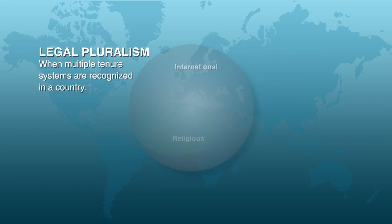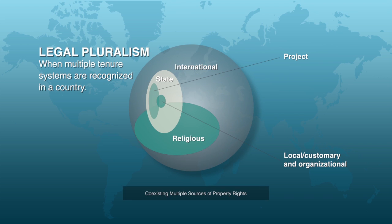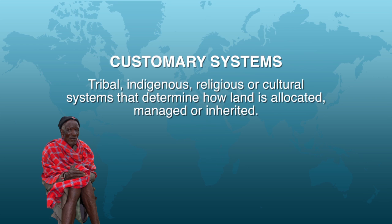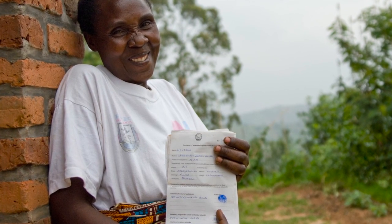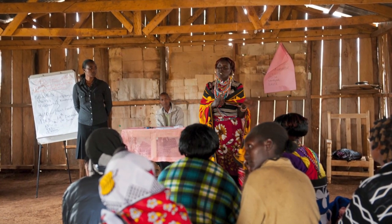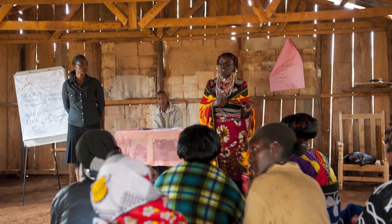Legal pluralism is a reality in most countries — within any one country, multiple property rights systems may co-exist. Customary systems may include tribal, indigenous, religious, or cultural systems that determine ways land is allocated, managed, or inherited. One approach is for policymakers to recognize the importance of traditional norms and incorporate them into legal systems. The challenge is how to legalize what is called traditional, rather than relying solely on formal law — how to integrate the formal and informal, and when to draw on each. A hybrid of rules and regulations that takes care of both tradition and the modern may be the best approach.